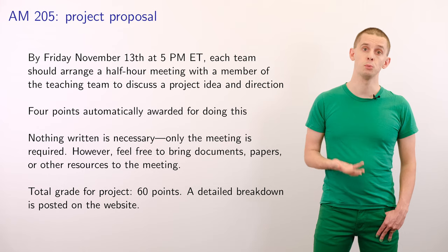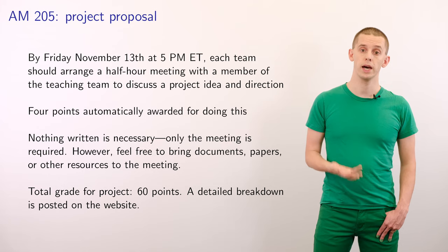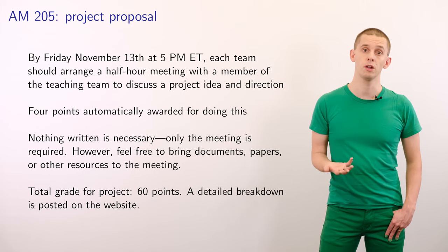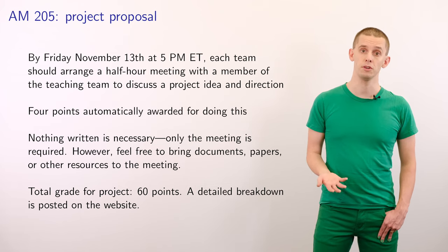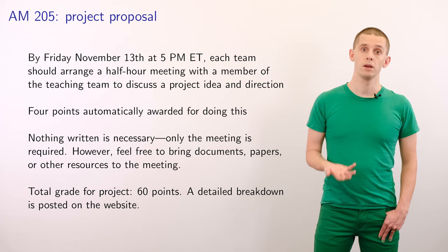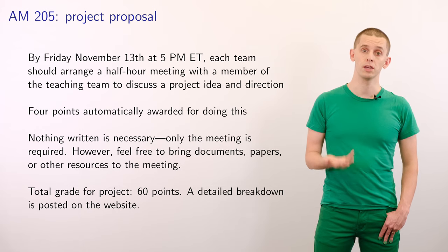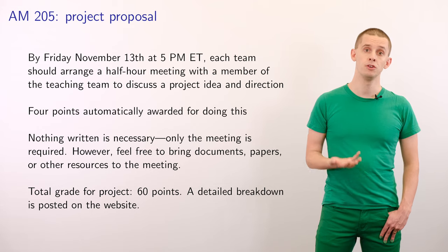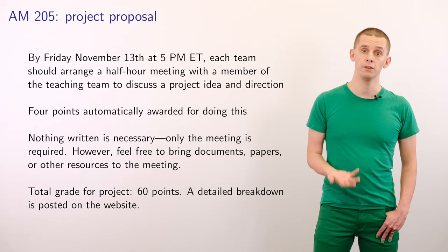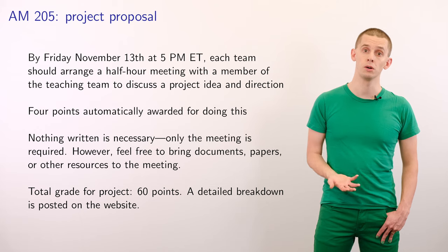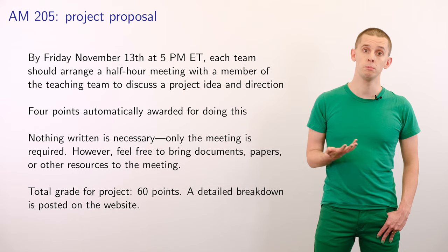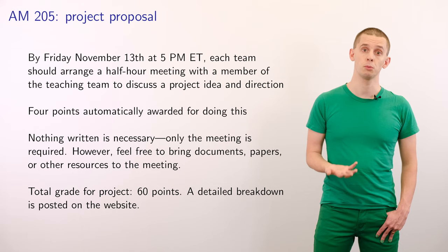The total grade for the project will be 60 points, and a detailed breakdown of the point allotment is provided in a document on the website that provides a number of other further details. In AM205, the homework assignments have deadlines that are deliberately front-weighted toward the first half of the semester. This is deliberately designed to free up time in the second half of the semester to work on the final project, and we therefore hope that you'll have enough time to really be ambitious with your final project idea.